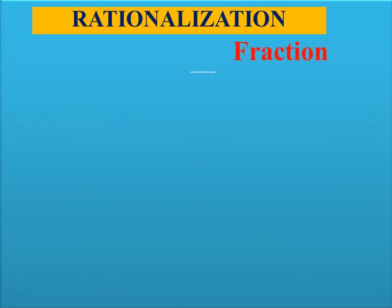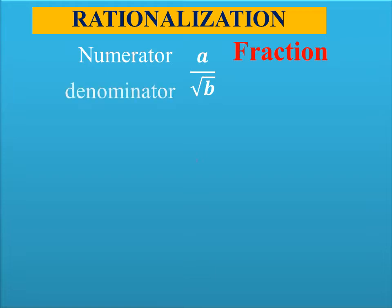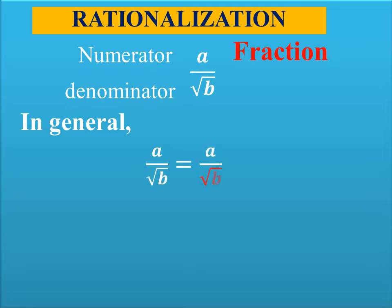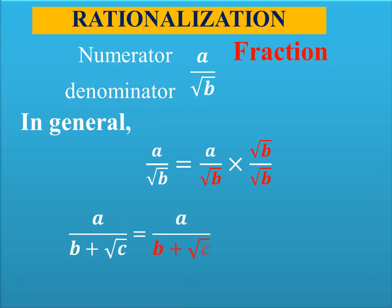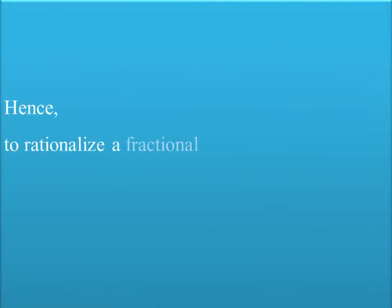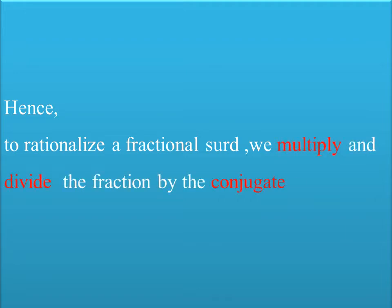Let's move to rationalization of surds. Here we take the fraction A over √B, where A is the numerator and √B is the denominator. In general, A/√B = A/√B × √B/√B. Also, A/(B + √C) = A/(B + √C) × (B − √C)/(B − √C). To rationalize a fractional surd, we multiply and divide the fraction by the conjugate of the denominator.